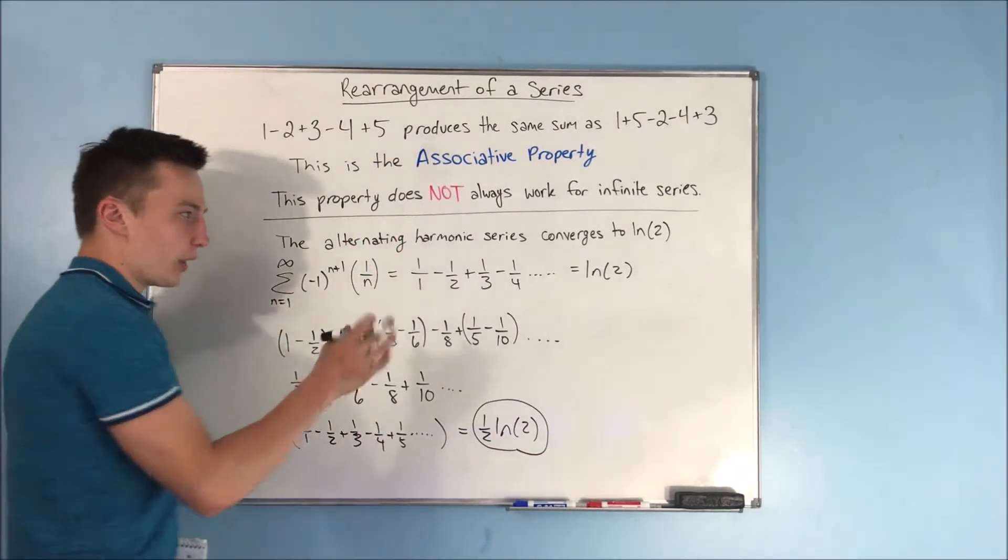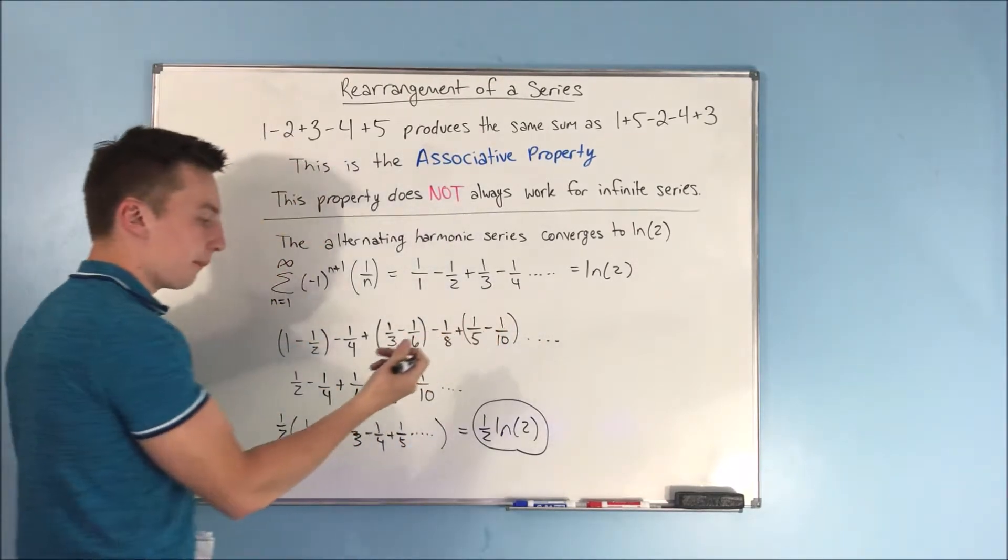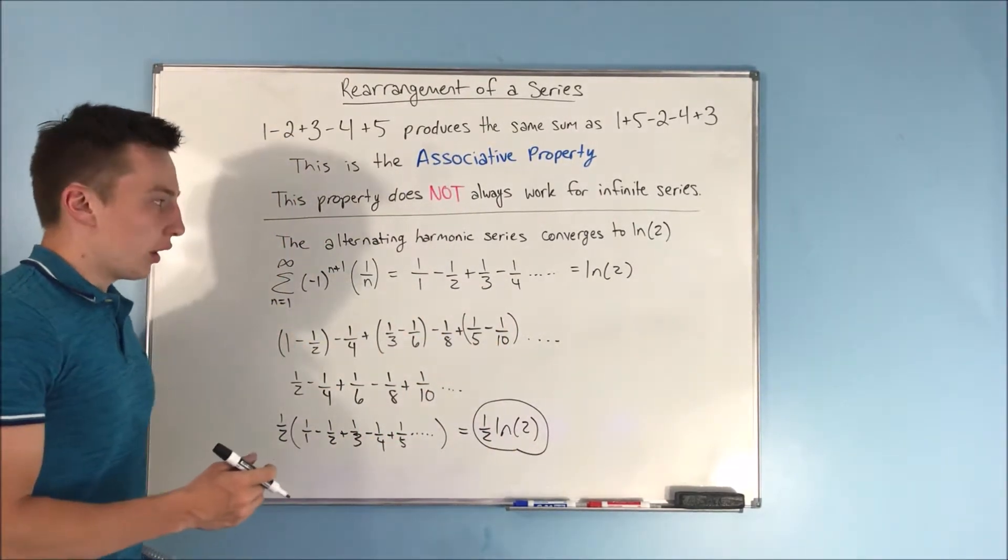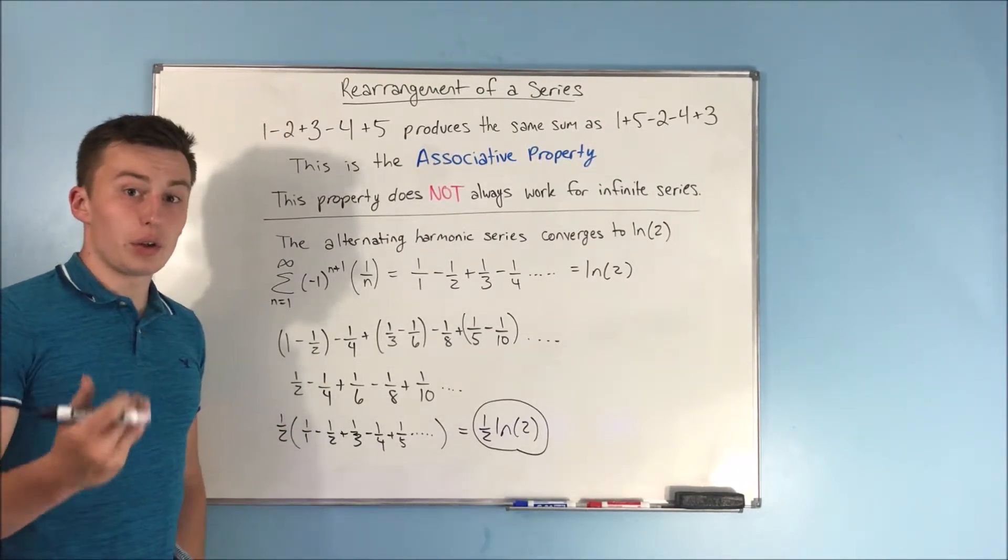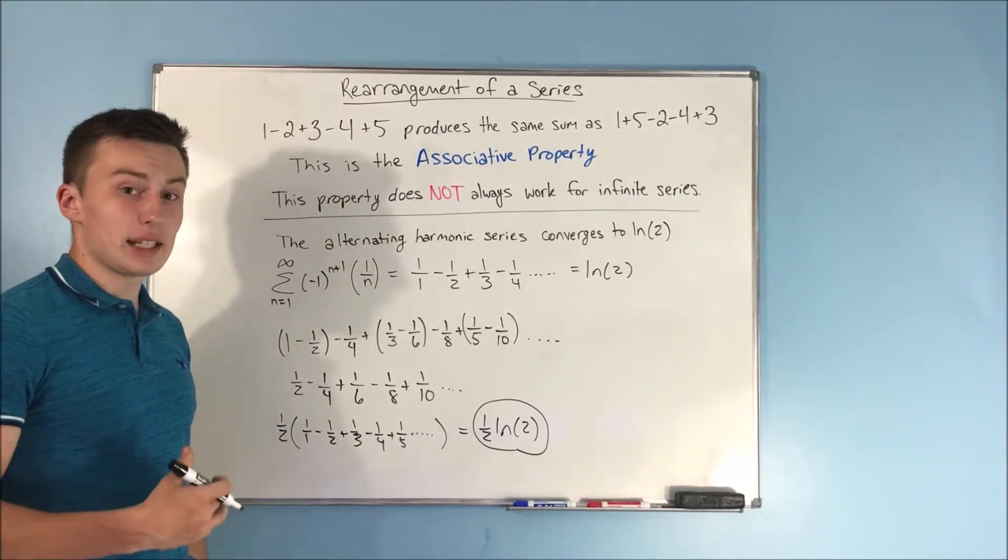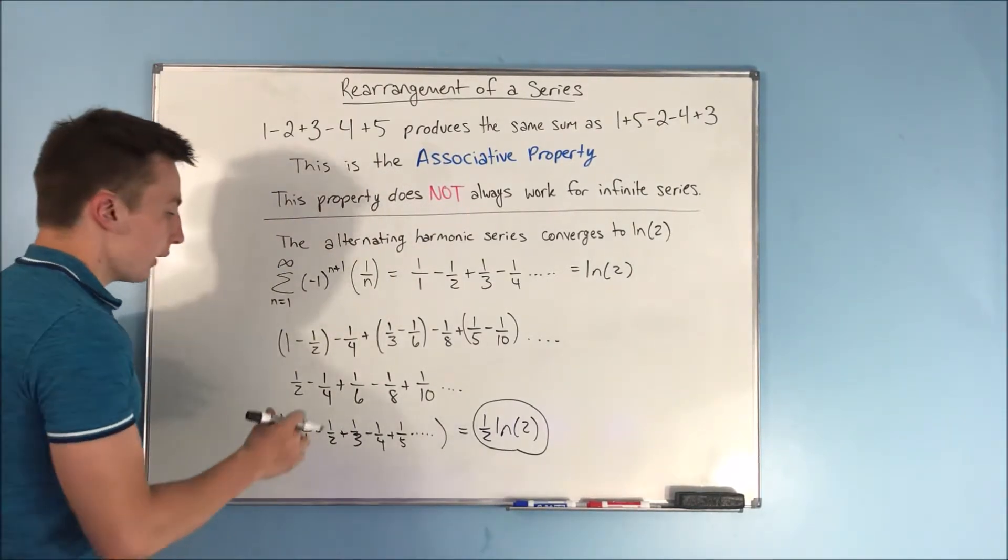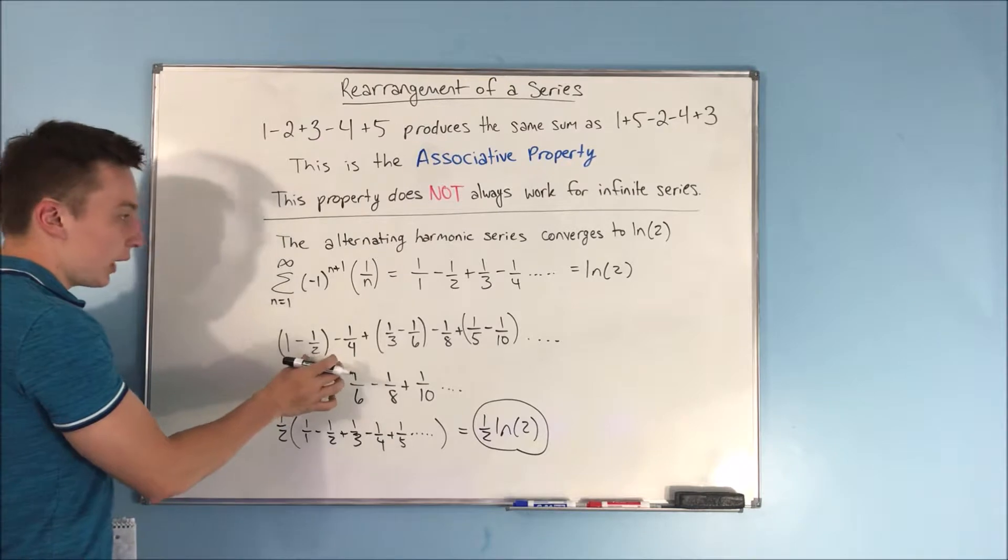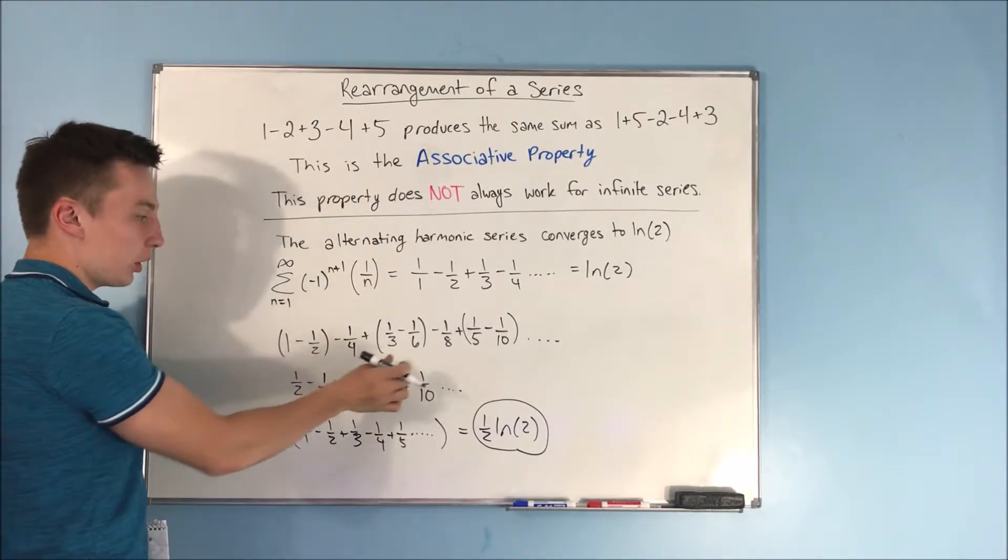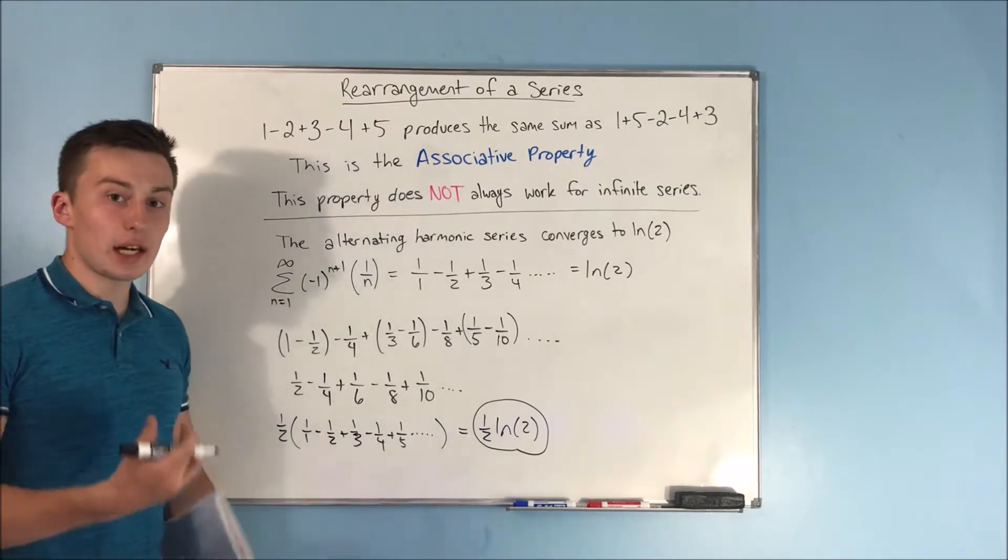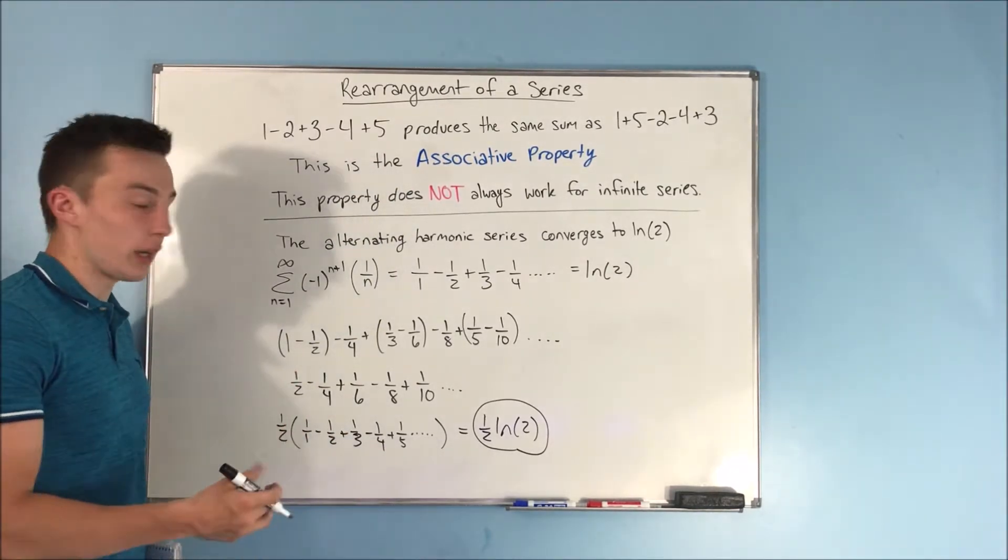We just rearranged the terms of the series and ended up getting a different answer. Well, the reason you can kind of think about this on your own. It kind of ends up making sense after a while of thinking about it. But what you're doing is now you are subtracting 2 terms before you add another. And what that does is it kind of throws off the whole imbalance of what you're doing.